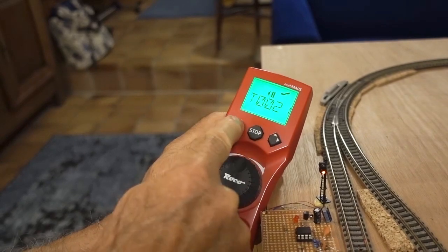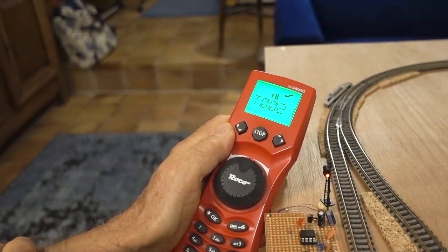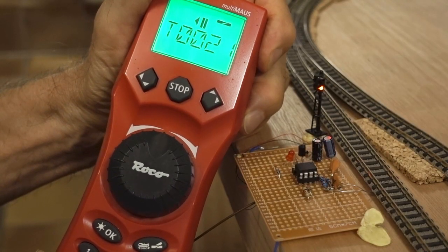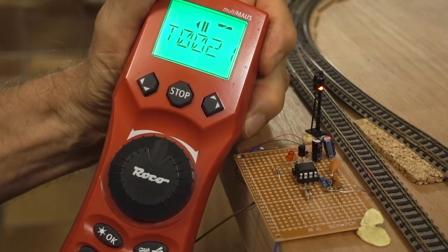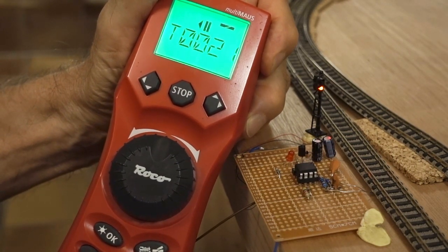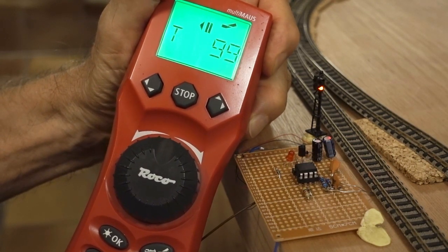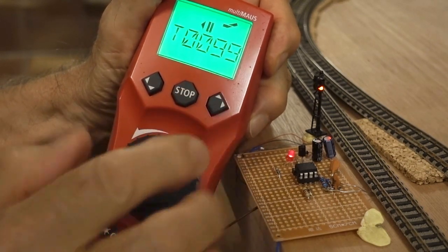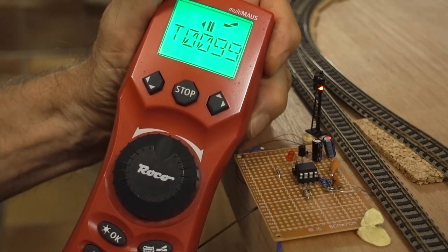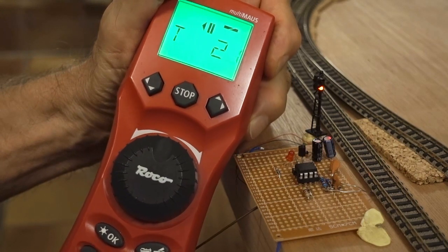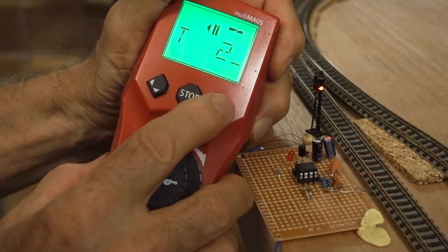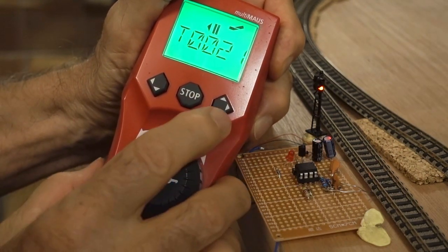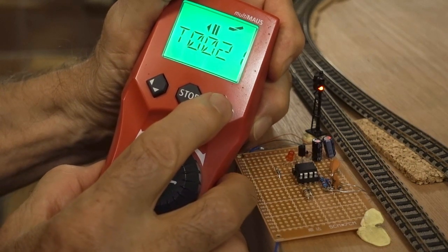Now I'm going to show you how the address is set into the DCC decoder. I set address 99. There's an acknowledge. And now I set the address I want, which is 21. And now the signal will respond to address 21. Thus.